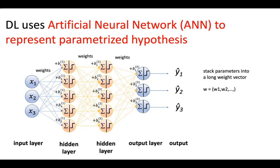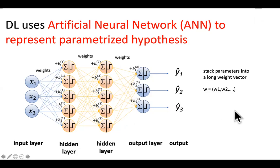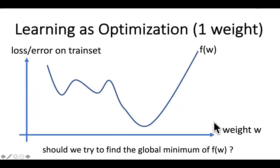How many parameters do typical neural networks have today? Not 10, not 100, not 1000 — millions is even on the lower end. Nowadays, we routinely use artificial neural networks with billions of parameters. So you have to optimize a weight vector of length one billion, which is an incredibly difficult problem.